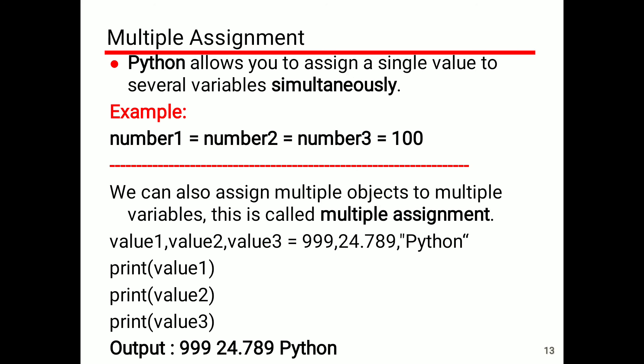Multiple assignment: Python allows us to assign a single value to several variables simultaneously. Example: number1 = number2 = number3 = 100. We can also assign multiple objects to multiple variables — this is called multiple assignment. Example: value1, value2, value3 = 999, 24.789, 'Python'.